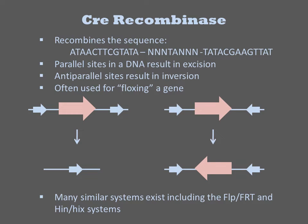Cre recombinase comes from the E. coli phage P1 and recognizes a 34 base pair sequence and recombines two of them. The site is not palindromic and thus it is not the same sequence on both strands, and it has directionality. For a DNA containing two such sites, they can be arranged in the same orientation, called parallel, or on opposing strands, called antiparallel.